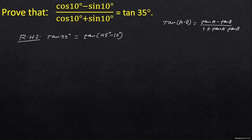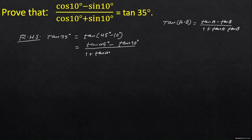We will apply this formula. So here we will get tan(45°) minus tan(10°) upon 1 plus tan(45°) into tan(10°). And this is equal to — tan(45°) is equal to 1 — so: 1 minus tan(10°) upon 1 plus 1 into tan(10°).